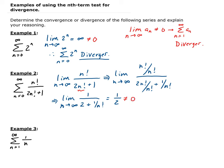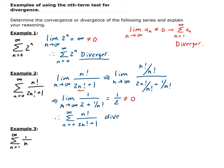By the nth term test, since the limit equals 1/2 which is not zero, we have n factorial over n factorial plus 1, and this series diverges.